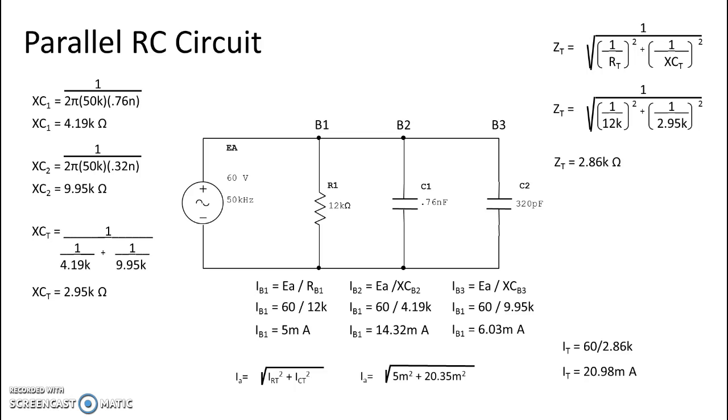Just a quick reminder: when we have these straight parallel circuits with only one component in the branch, all of those components have applied voltage. So R1, C1, and C2 all have a voltage of 60 volts. That's it for parallel RC circuit calculations. Next we're going to look at changes in frequency.